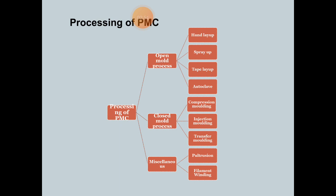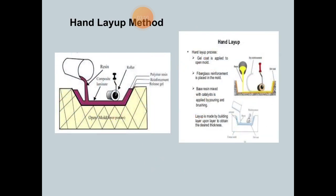These are the processing of thermoplastics FRP and thermoset. Now turn to the first process: open mold in which hand layup process. See the figure of the hand layup process.